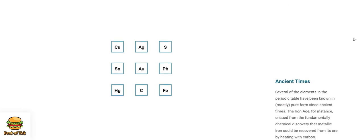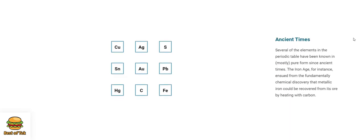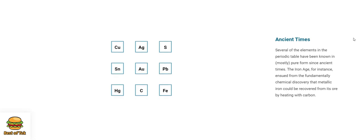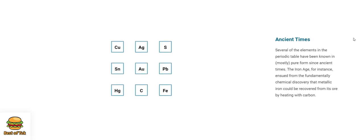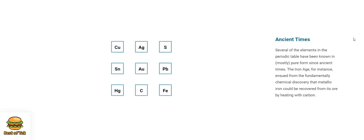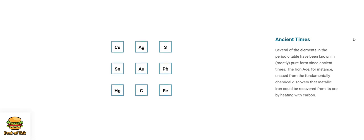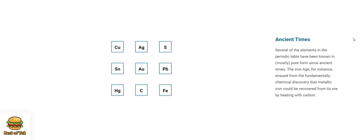Ancient times. Several of the elements in the periodic table have been known in mostly pure form since ancient times. The Iron Age, for instance, ensued from the fundamentally chemical discovery that metallic iron could be recovered from its ore by heating with carbon.